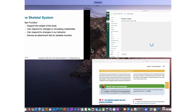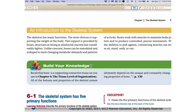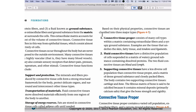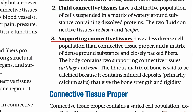Periodically in the textbook, the authors include a Build Your Knowledge feature, which serves to immediately remind you of earlier material that will increase your comprehension and integration of new information. Here the authors remind us that bone is a supporting connective tissue, as you saw in Module 4.4. We saw there that connective tissue can be divided into three major categories: one, connective tissue proper; two, fluid connective tissue; and three, supporting connective tissue. Supporting connective tissues have a less diverse cell population than connective tissue proper, and a matrix of dense ground substance and closely packed fibers. This will be seen to be true for the various organs of the skeletal system.